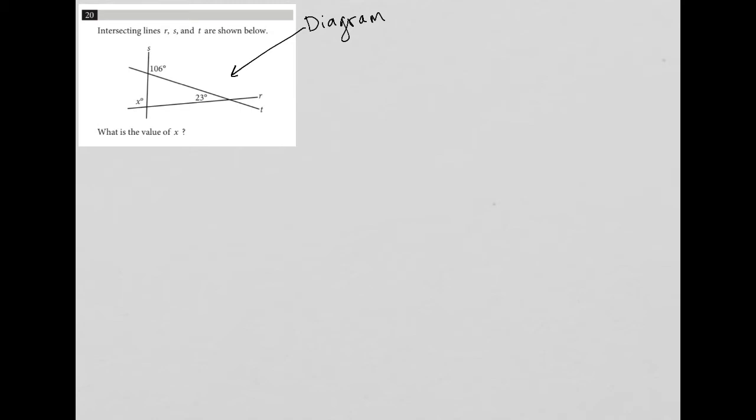So for instance, if this angle here is 106, then I know that the angle next to it is 74 because those two angles are supplementary.